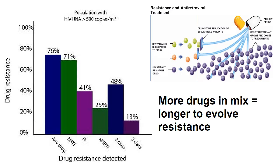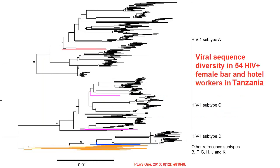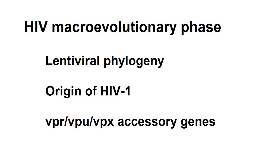Now we're back to the funeral scenario. In a study of female bar and hotel workers in northern Tanzania, 7% of HIV samples showed primary resistance to the AZT class of drugs — the RT inhibitors — and 7% had resistance to all the protease inhibitors. Statistically, we would then expect about half a percent to be completely resistant to the triple cocktail.